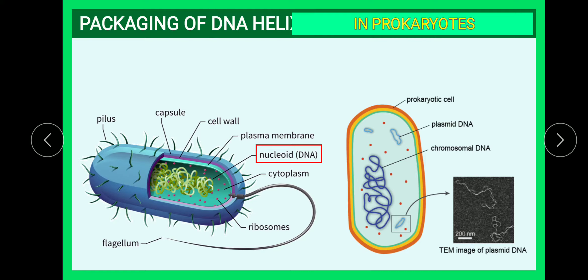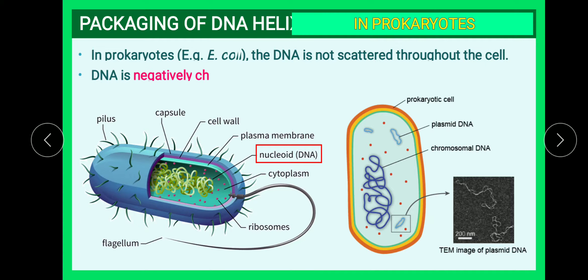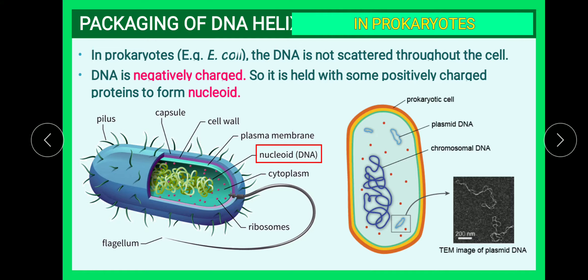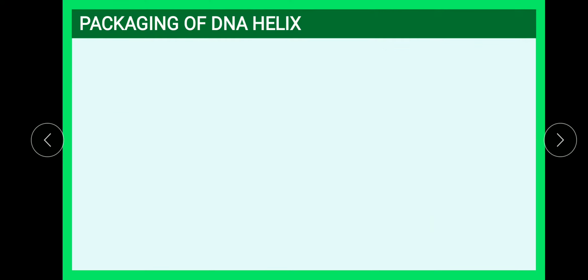In prokaryotes, the DNA is not scattered throughout the cell. Because DNA is negatively charged, it is held with positively charged proteins such as arginine and lysine to form a structure called the nucleoid. The prokaryotic nucleus equivalent is called the nucleoid.